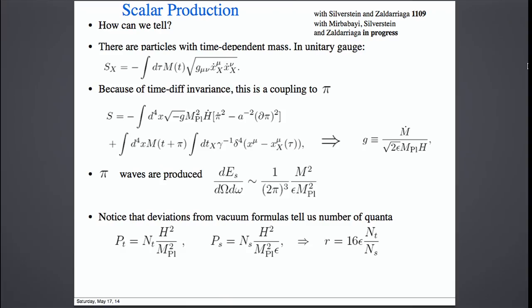How to tell this scenario apart? These particles must have a time-dependent mass because they must be quantum-produced by the inflaton. If I go to the unitary gauge where the physical clock is uniform, there is a time-dependent mass. Because of time-diffeomorphism invariance, this time-dependent coupling must couple to pi, the Goldstone boson of time translation. The coupling would be m(t+pi). Therefore, there is a cubic coupling between pi and this particle. This means that when the particles produce gravitons, they will also produce scalar fluctuations. The scalar fluctuations per unit frequency will also go like m squared over M_Planck squared.